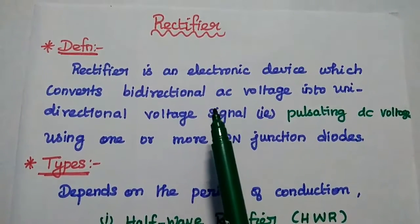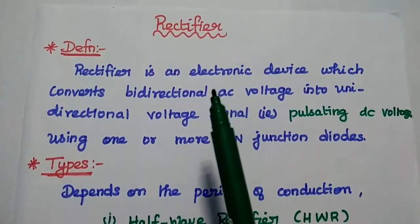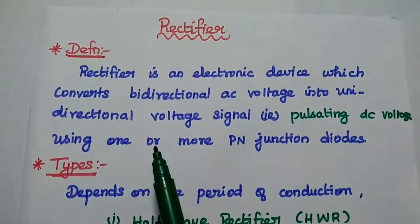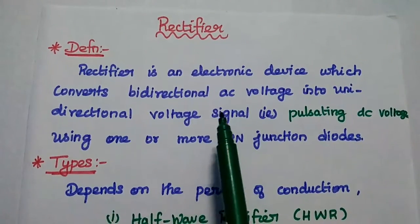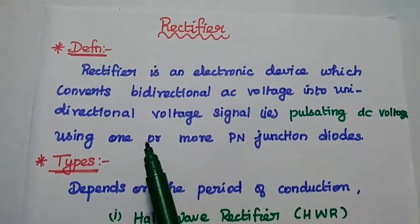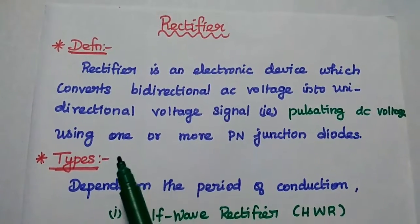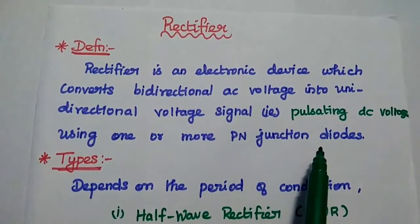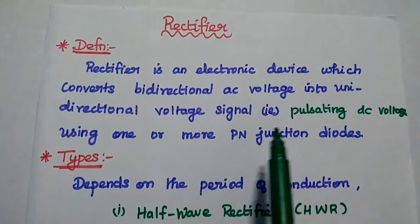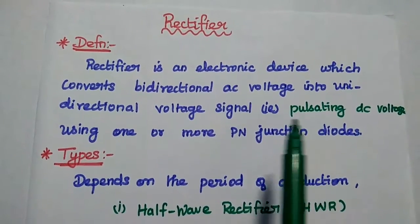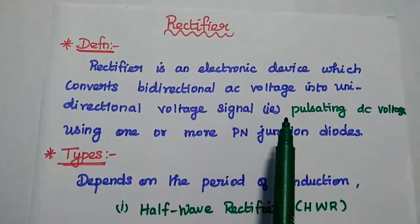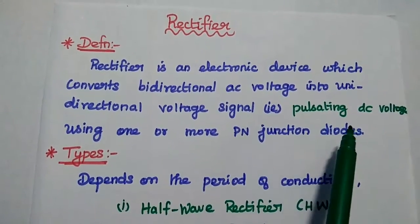Dear students, now we are going to discuss the basics of rectifier, its types and its comparison. A rectifier is an electronic device which converts bidirectional AC voltage into unidirectional voltage signal using one or more PN junction diodes. This unidirectional voltage signal can also be represented as pulsating DC voltage. The rectifier is mainly used to convert bidirectional AC voltage into pulsating DC voltage.